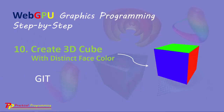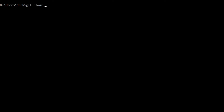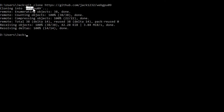We will use the git tool to clone the source code used in the last video. Here is the download link at the GitHub repository. From this link, you can download all the source code used in the last video. Open a command prompt window and run the following command: git clone and paste the link. This will generate a webGPU09 folder on your local machine containing all the source code used in the last video.